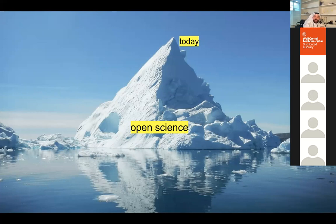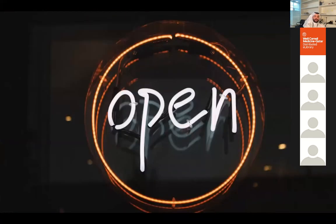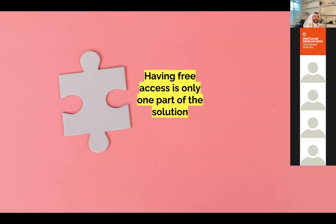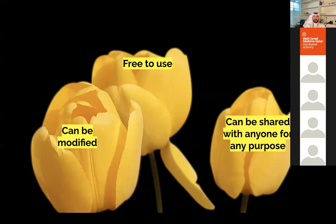What's important is to define what we mean by 'open.' Having free access is only one part of the solution. When it comes to open access publishing, you need something that is free to use, something that can be shared with anybody for any purpose without much restriction, and something that can also be modified — to build upon the work.